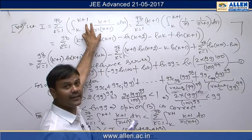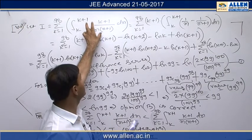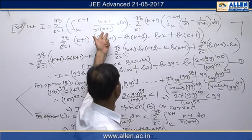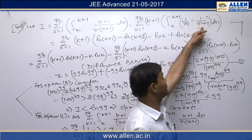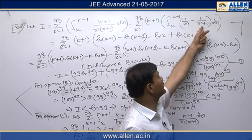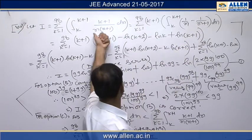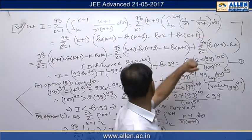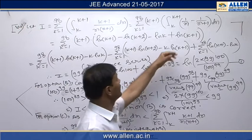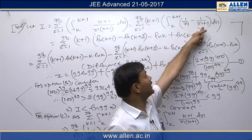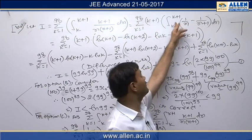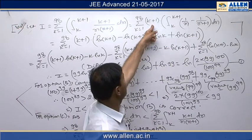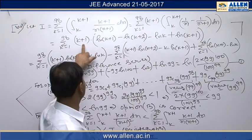On solving this definite integral, we get the value as a function of k. We write 1/(x(x+1)) as 1/x minus 1/(x+1) using partial fractions. The difference of these two terms gives the same 1/(x·(x+1)). Integrating, we get ln(x) minus ln(x+1), and putting in upper minus lower limits, then multiplying by the outside factor (k+1).